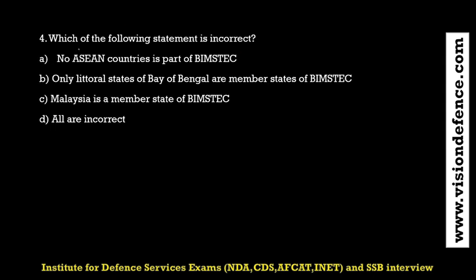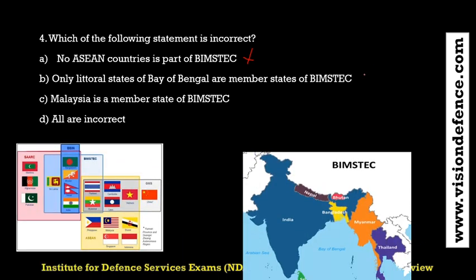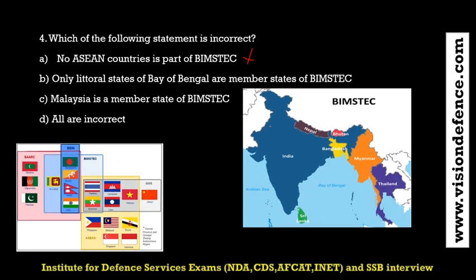Which statement is incorrect? 'No ASEAN country is part of BIMSTEC' - this is incorrect because Thailand and Myanmar are part of BIMSTEC. 'Only littoral states of the Bay of Bengal are member states of BIMSTEC' - this is also incorrect because Nepal and Bhutan are part of it. Malaysia is not part of BIMSTEC. So all statements are incorrect.